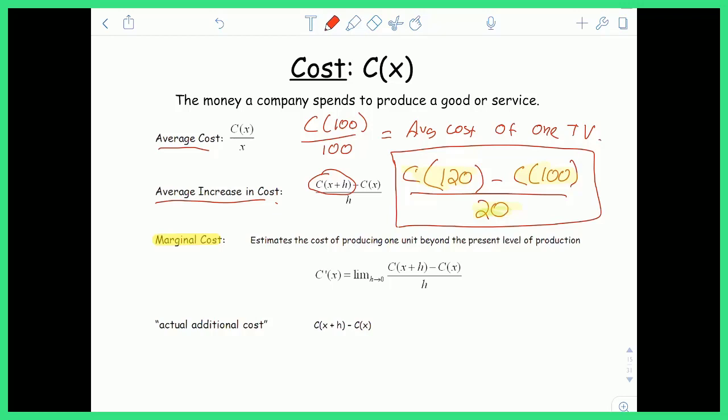Marginal cost is the big one for us. And what marginal cost essentially does is it estimates the cost of producing one unit beyond the present level of production. So first of all, if we assumed we were making 100 TVs again, what marginal cost would actually do is it would give us an estimate for the cost of producing the 101st TV.